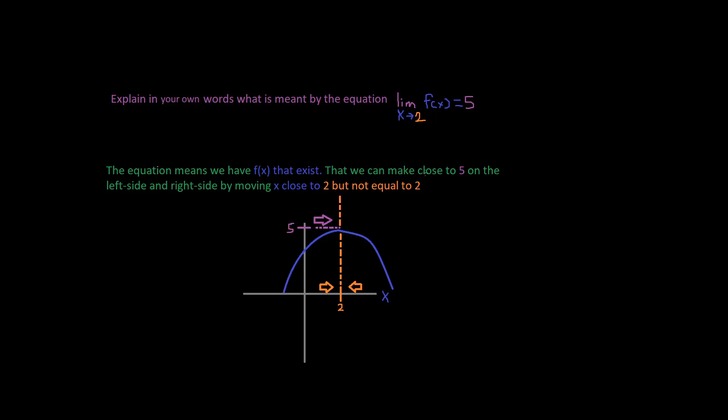That we can make it close to 5 on the left side and the right side by moving x close to 2 but not equal to 2.